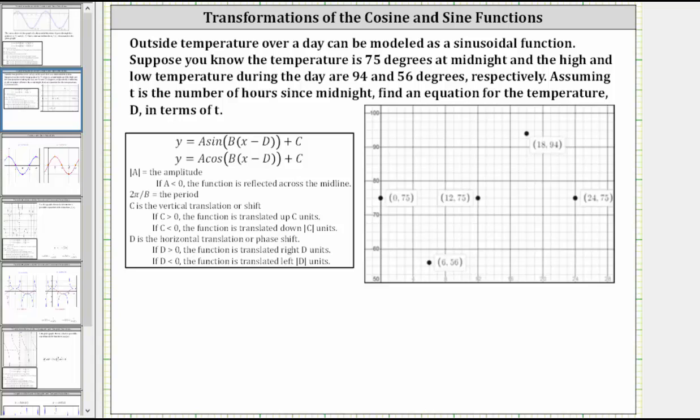Since T is the number of hours since midnight, T equals zero represents midnight, and at midnight we know the temperature is 75 degrees. Therefore the first ordered pair is zero comma 75, this point here. Now we'll plot the key points over one day, which is equal to 24 hours.